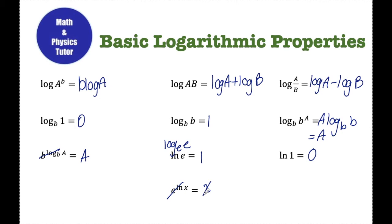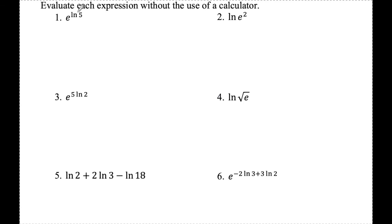Let's look at some examples where I'll have to apply these rules to simplify expressions. Number one: e to the ln 5. The base and the log base cancel, so you're left with just what you're taking the log of — five. Number two: ln of e — that equals one, so that goes away and you're left with that exponent, two.